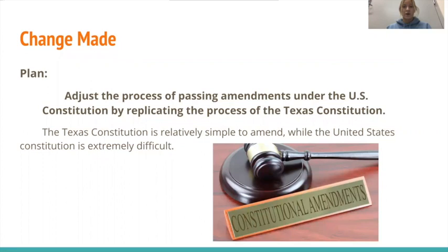However, they are very different based on the purpose behind them and why they were formed. The U.S. Constitution was made to practically bring more power to the government after the Articles of Confederation were found to be weak, while the Texas Constitution was formed in order to decentralize that power and limit too much government action and power.